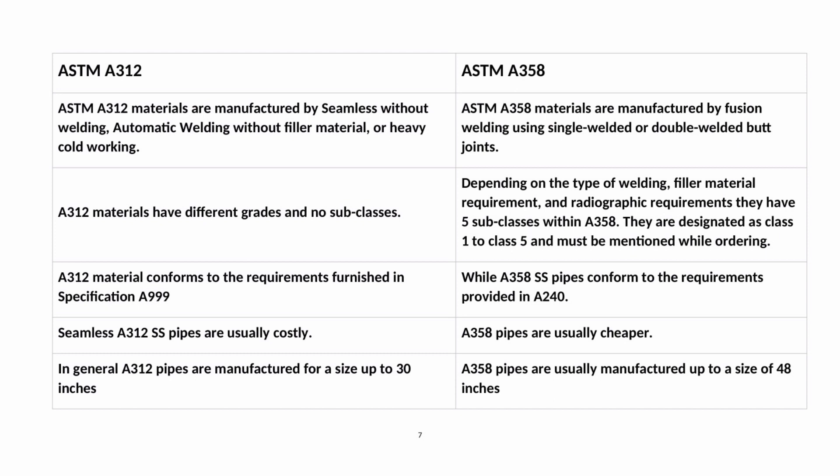A312 material conforms to the requirements furnished in specification A999, while A358 stainless steel pipes conform to the requirements provided in A240. Seamless A312 SS pipes are usually more costly. A358 pipes are usually cheaper. In general, A312 pipes are manufactured for sizes up to 30 inches, while A358 pipes are usually manufactured up to a size of 48 inches.